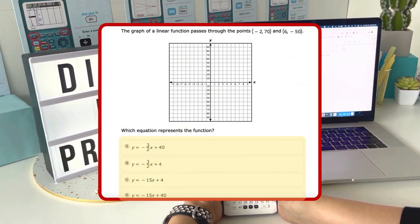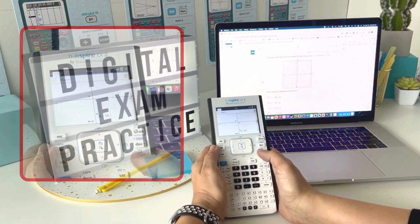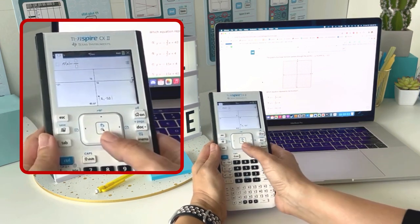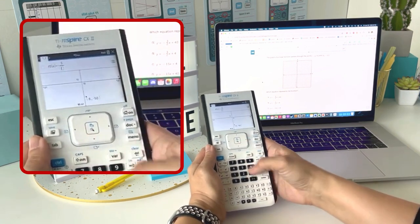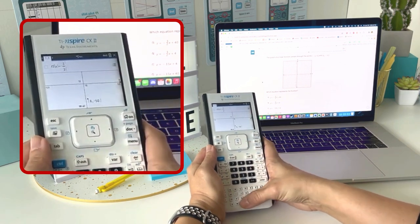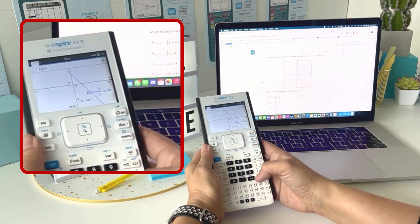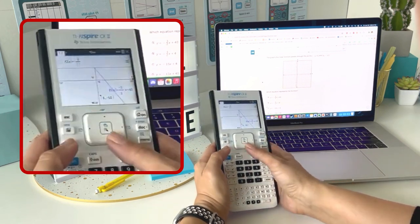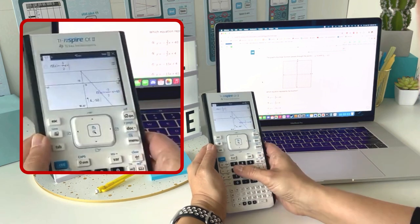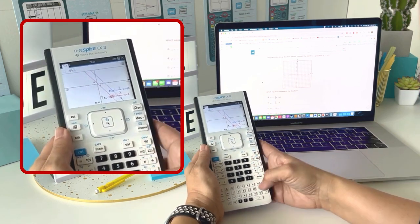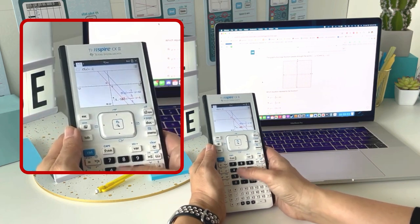If you hit escape, you can type in the four functions that are given. So the first function I'm going to type in is negative three halves. To get my fraction, I'm going to type control divide, negative three halves x plus 40. I'm going to hit tab to type in my second function, negative three halves x plus 4. And I'm basically looking for the function that goes through those two coordinates that are given.